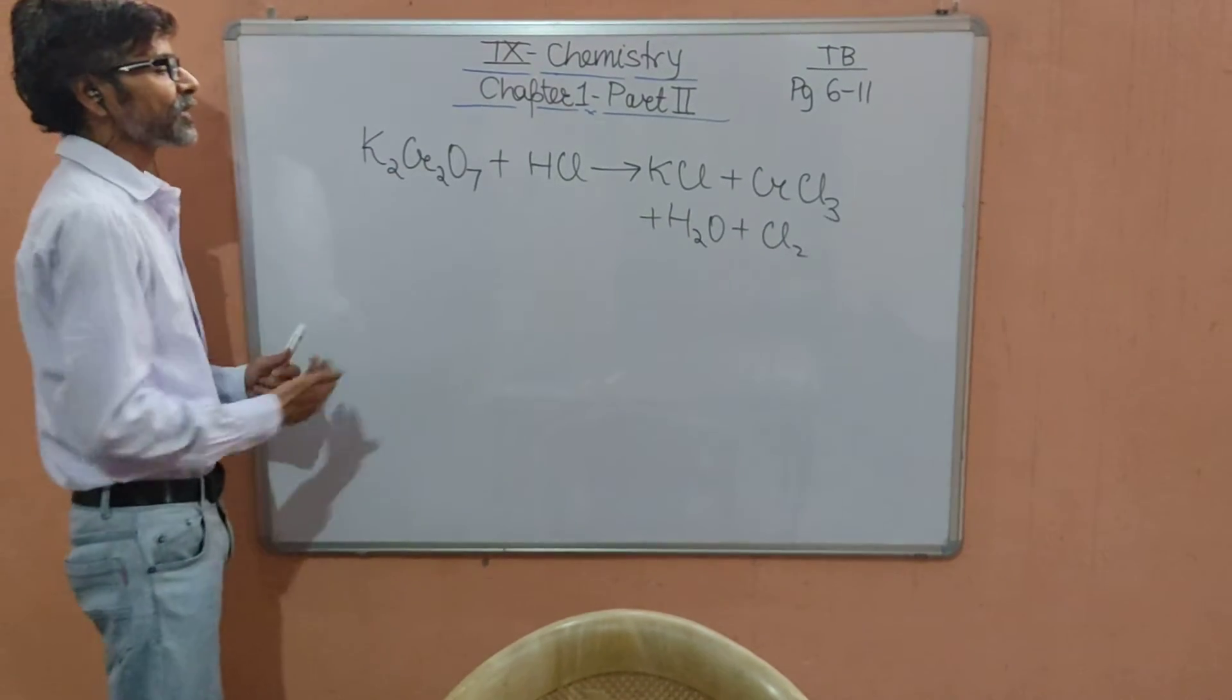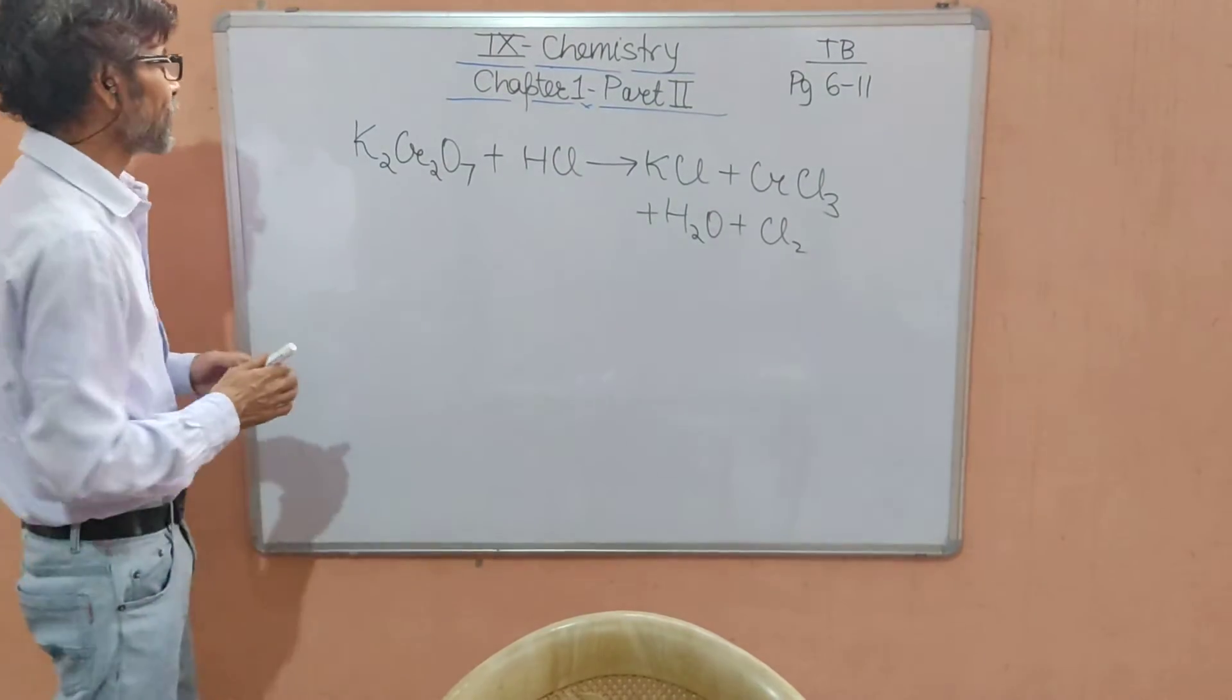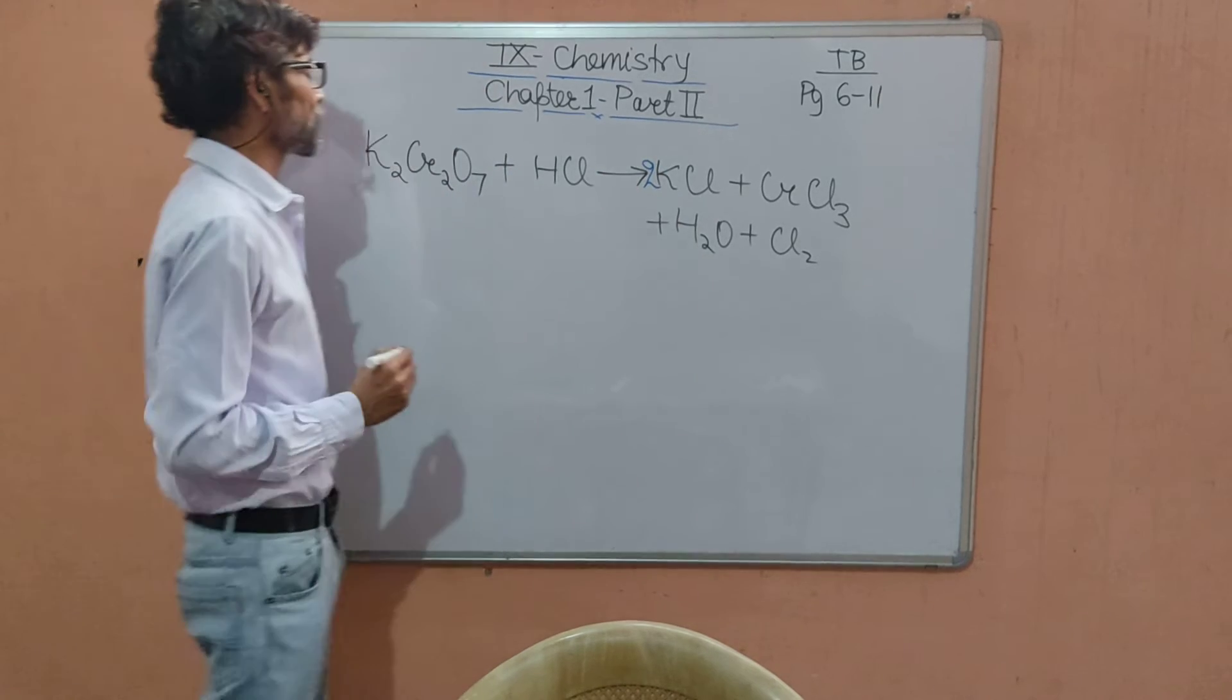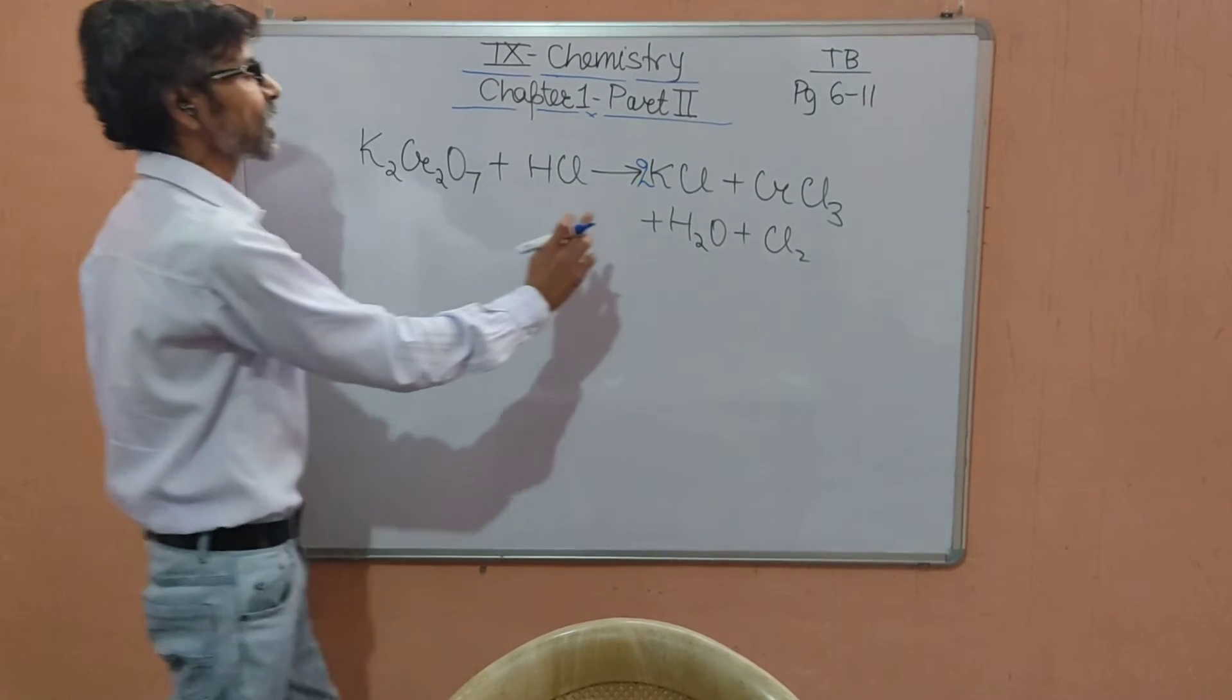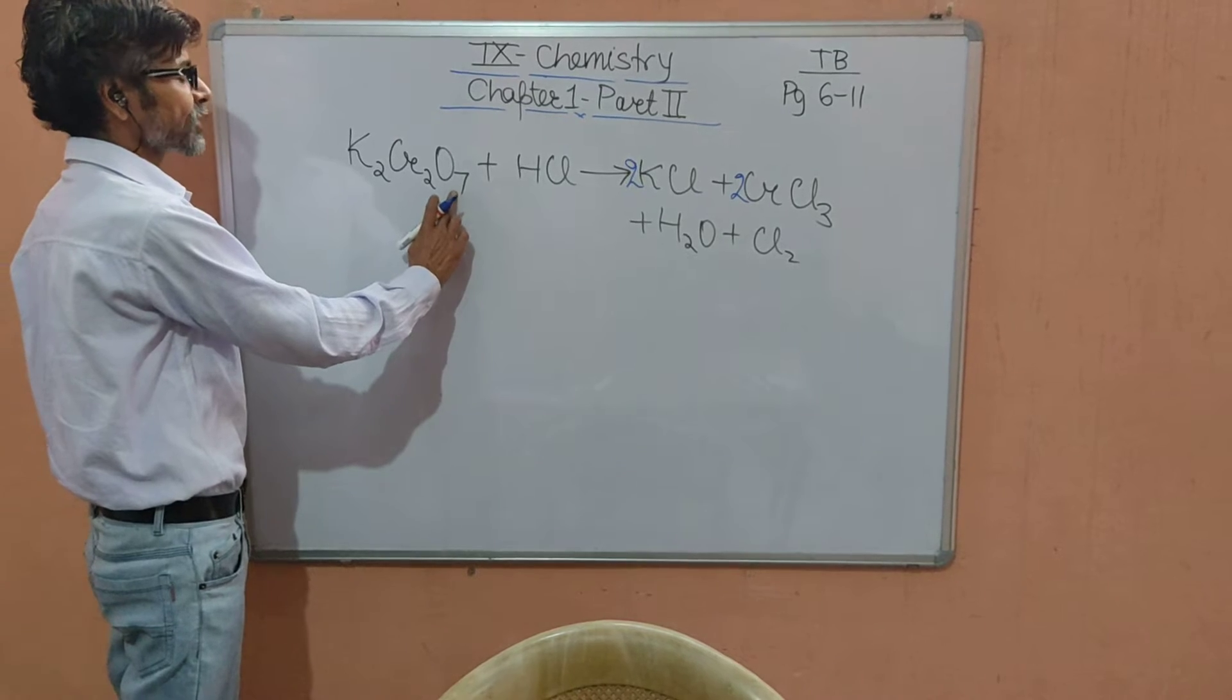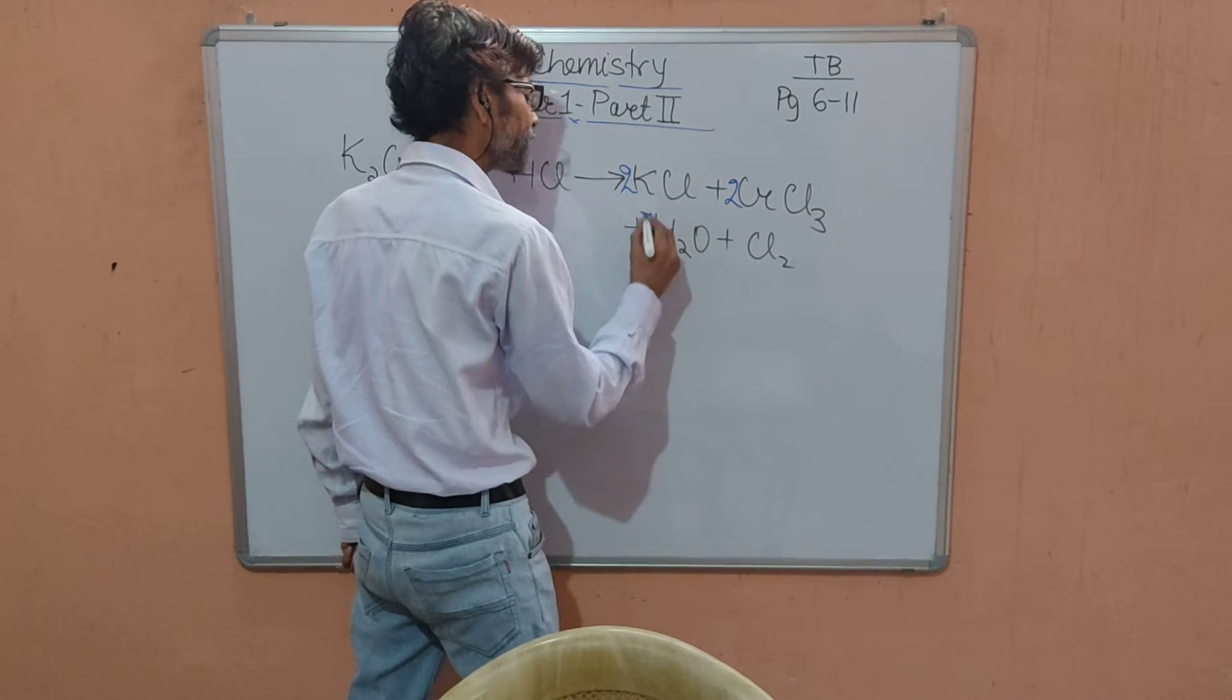To balance this we compare the reactant side to the product side individually for each atom. Firstly we check the potassium atom, here two potassium atoms. By multiplying here by two we balance the potassium atom. Then the chromium atom, here two chromium atoms are there, here only one, we multiply here also by two. The chromium is also balanced. Then oxygen, seven oxygen atoms. If we multiply this O here in the H2O by seven, we get seven oxygen atoms.